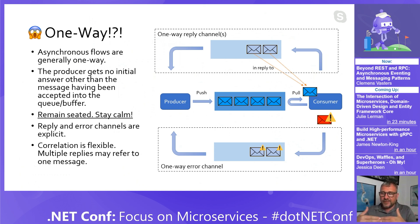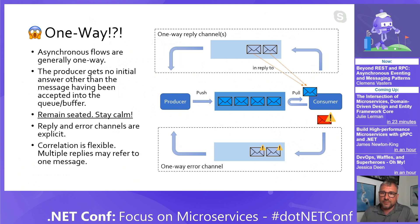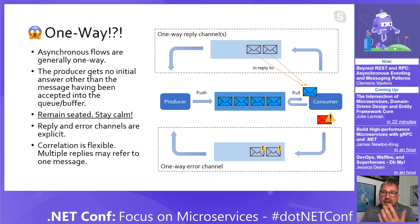That also enables reply and error channels to become explicit — they're not tied into the request-reply channel and don't depend on it staying alive. So if you have very long-running activities that take hours or days, you're not depending on a single volatile, brittle socket staying alive. You're explicitly modeling how your replies come around and how your errors return. Correlation is also flexible: you can send one message and answer with 30, or send one message, distribute it to multiple parties, and collect answers from all of them.